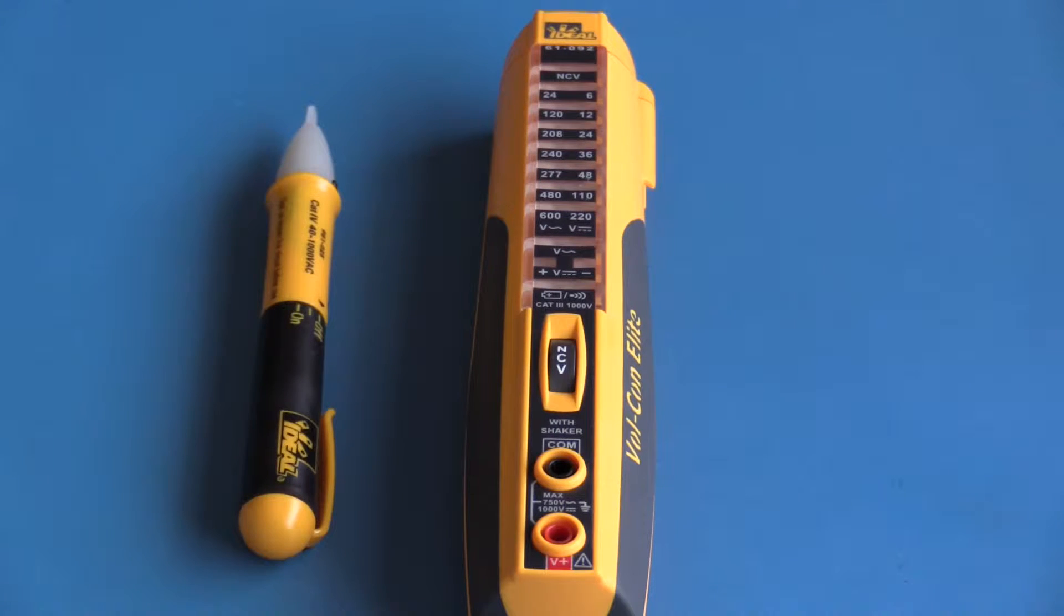For size comparison, here it is against a traditional non-contact voltage tester. This one from Ideal Industries is called the Volt Aware. The Voltcom Elite is significantly bigger. It's not intended to be used as a pocket non-contact voltage tester.